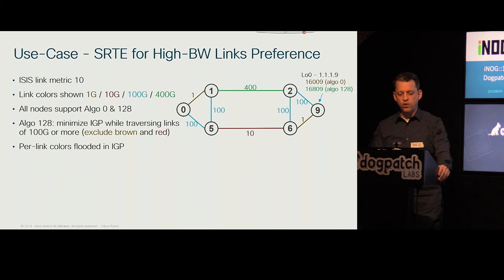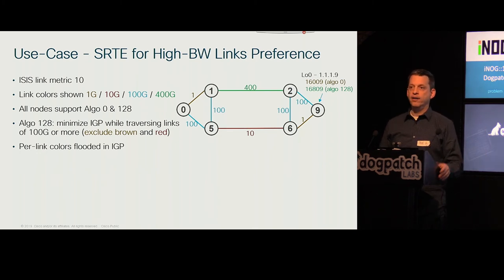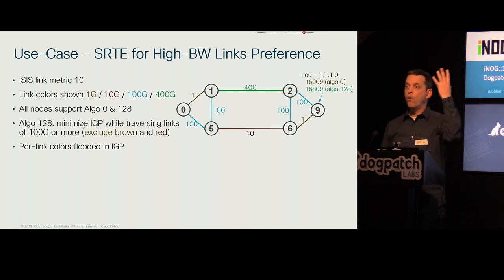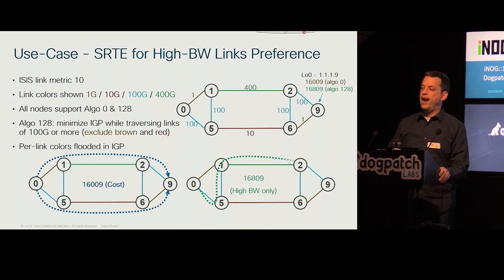My last use case is traffic engineering for high-bandwidth link preference — of interest to many carriers here in Europe. Your network has grown over time with 1G, 10G, and 100G links — and soon 400G. Define a Flex Algo that only takes you over links of 100G or above. Same concept: color the links with affinity groups, flood them in the IGP, and the IGP computes a path from 0 to 9 traversing only 100G-or-above links.